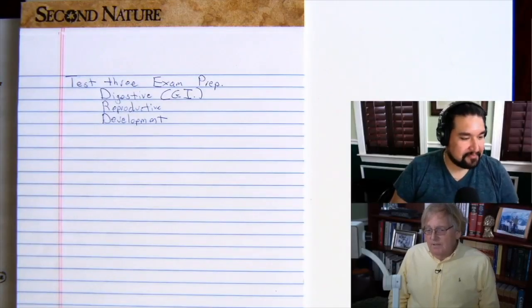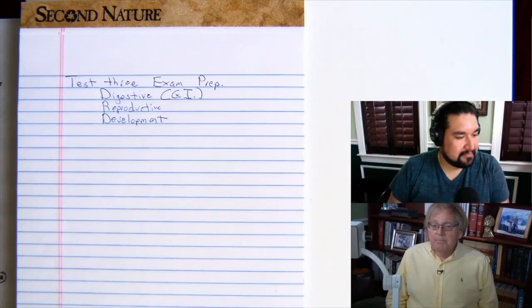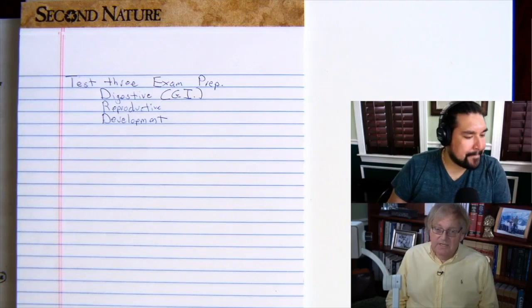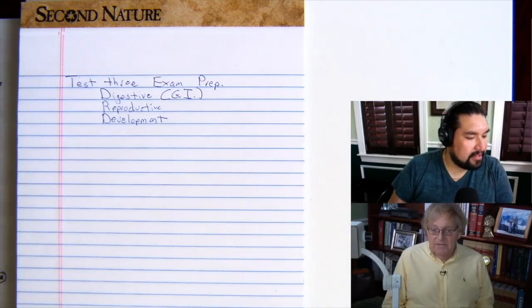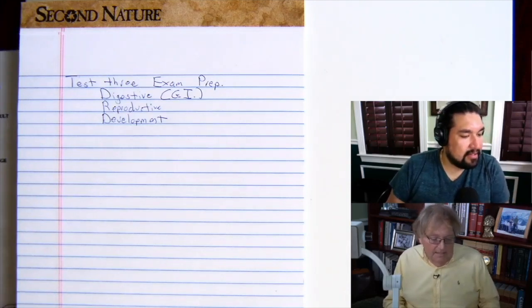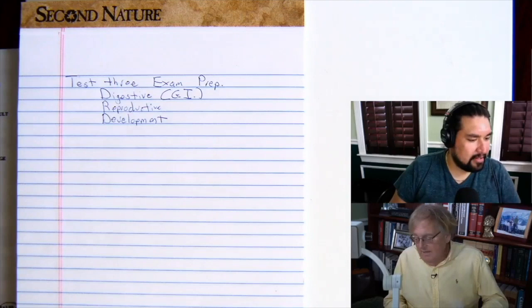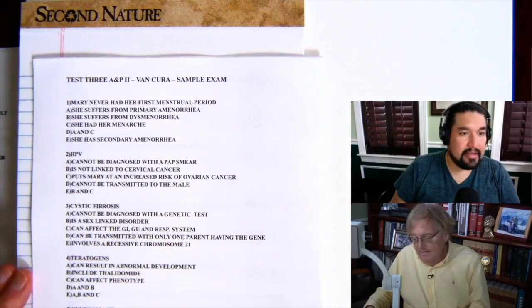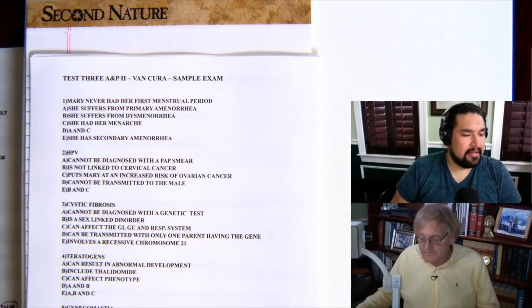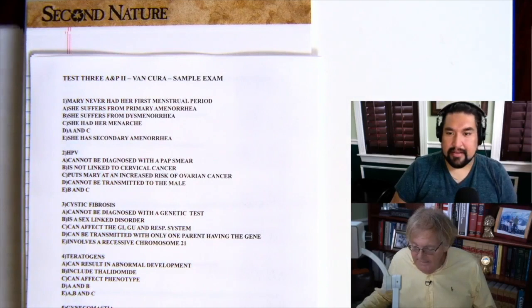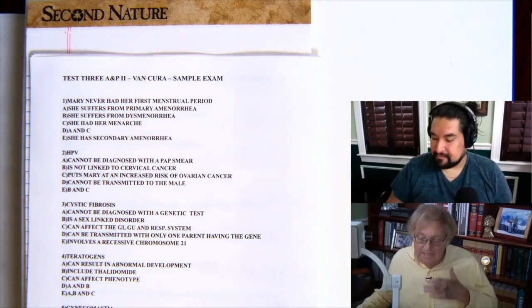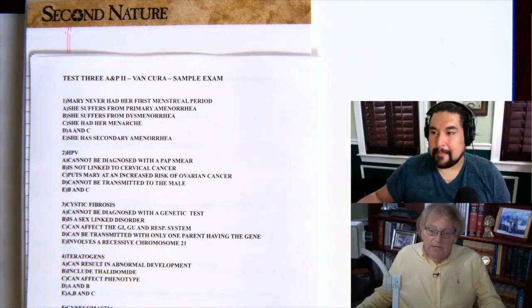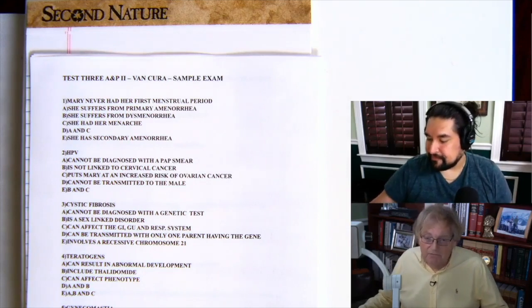Today we're going to do the Test 3 exam prep. Test 3 covers the digestive tract, which I call the GI or gastrointestinal, reproductive — both male and female — and development. You'll be getting a copy of an old exam, called the Test 3 A&P 2 sample exam. Let's take a look at a few questions.